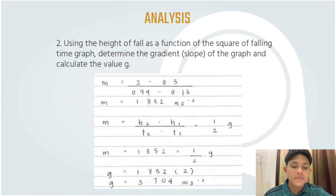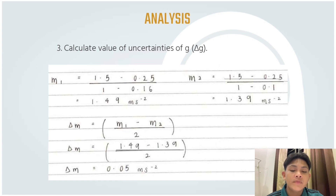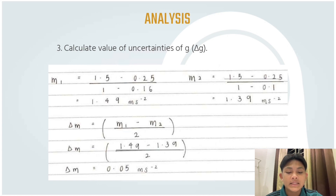For analysis number three, we calculate the uncertainties of g. First, we find the gradients m1 and m2. For m1: m1 = (1.5 - 0.25) / (1 - 0.16), giving m1 = 1.49 m/s². For m2, using the same formula: m2 = (1.5 - 0.25) / (1 - 0.1), giving m2 = 1.39 m/s².